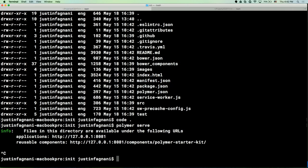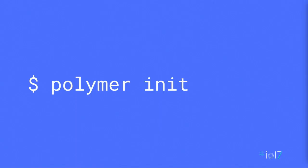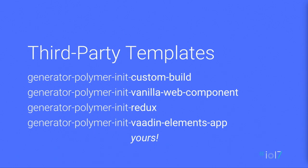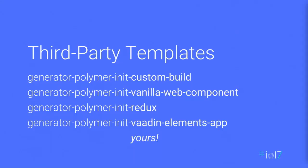So that's init. You saw the built-in templates it has, but we also allow you to install third-party templates. This is based on the Yeoman generator system — any npm package that starts with `generator-polymer-init` that's installed locally will show up in that menu. We have some nice templates available on npm: one with a custom build using Gulp, another that uses vanilla web components without Polymer, one showing Redux with Polymer, one for the VDNI elements — and of course, you can publish your own.